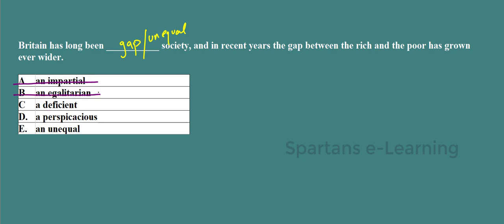'Egalitarian' means a society where everyone is equal — also wrong. 'Deficient' is out of context. 'Perspicacious' means very clear to understand — also out of context. Option E is 'unequal,' which directly matches the meaning we need. So the answer is unequal.